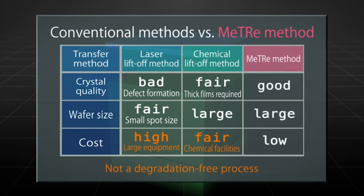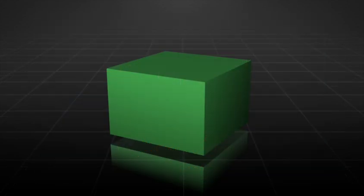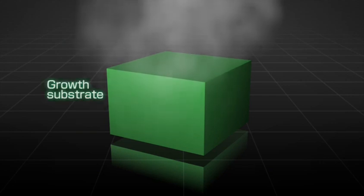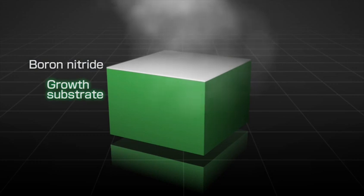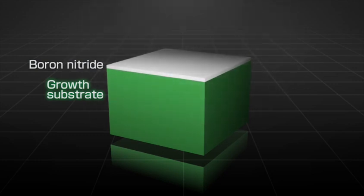Here we show the newly developed process in the NTT Basic Research Laboratories. The newly developed process involves the growth of an extremely thin layer of boron nitride between a sapphire substrate and the gallium nitride-based semiconductor. The boron nitride will be a release layer.